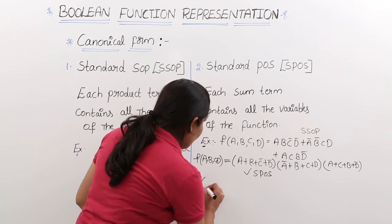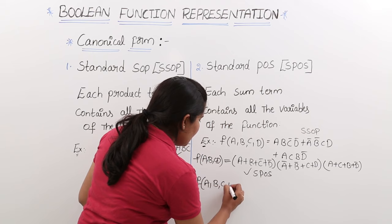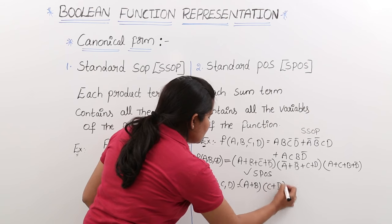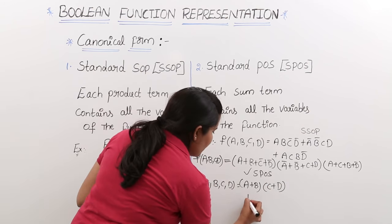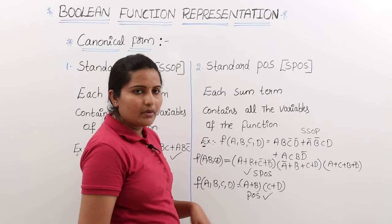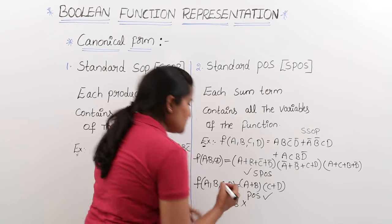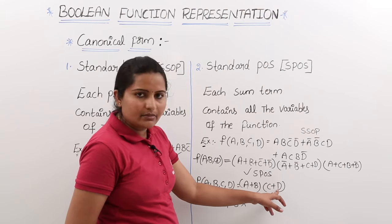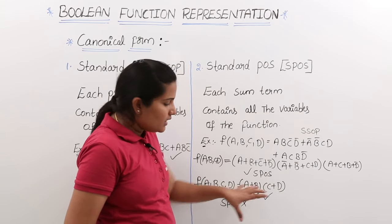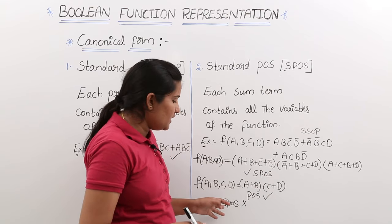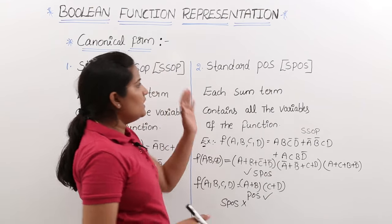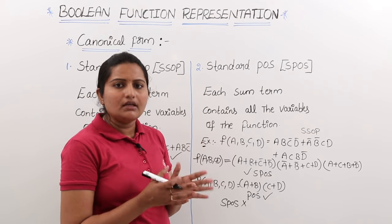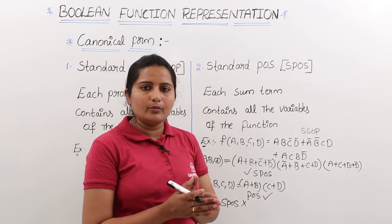For example, if someone gives you F(A, B, C, D) = (A + B)·(C + D), this is in POS form. Definitely it is POS form, but it is not in SPOS form because this first sum term misses two variables, and this second sum term also misses the first two variables. So this expression is just in POS, not in SPOS. This is the difference between POS and SPOS, and SOP and standard SOP. All these are called canonical form representation of a Boolean expression.